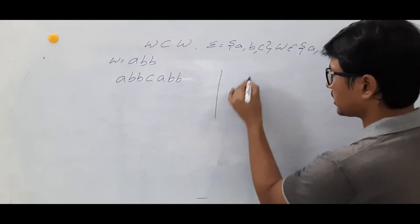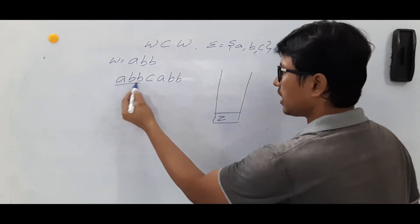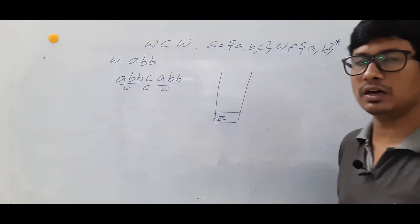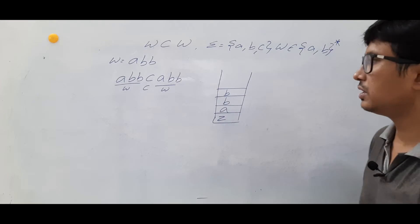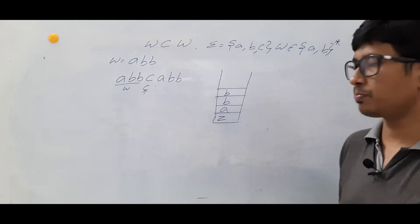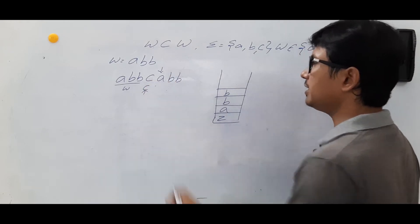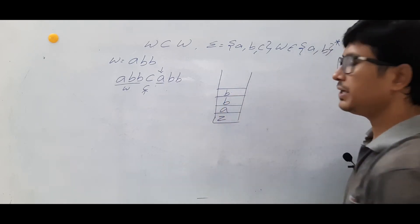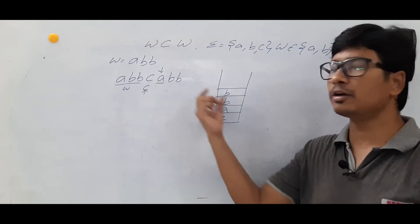Now, what I have to do? I have to take a stack and bottom of the stack is Z. I have a W and I have a C, and again I have a W. So I will push all the alphabets in the W — A I will push, B I will push, and B also I will push. Once I see a C, I will perform the skip operation — not pushing or popping anything.